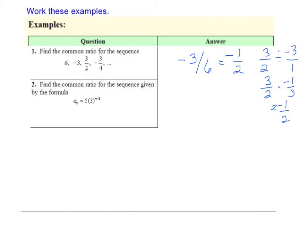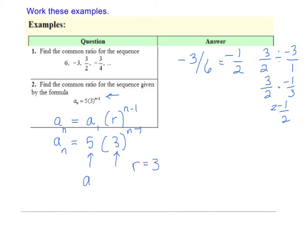In number two, when they give you a rule, we know this is a geometric rule because it's something to a power. The nth term of a geometric series equals the first term times the common ratio to the n minus one power. So if you write a sub n equals 5 times 3 to the n minus 1, it becomes obvious that 3 is r and 5 is a sub 1 — the sequence triples each time.